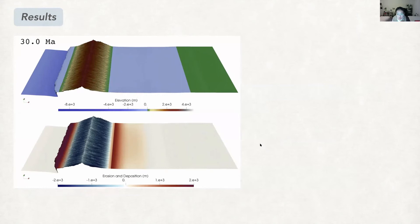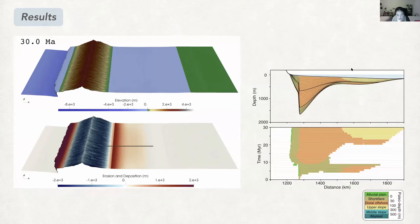As we focus on the stratigraphic record, we take a cross-section here and then reconstruct the stratigraphic patterns. Here different colors represent different deposition facies from shallow water to deep water deposits.